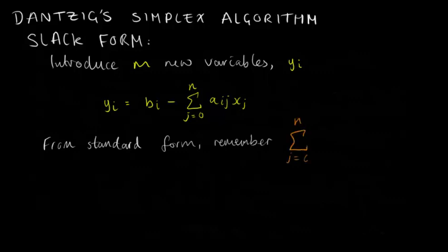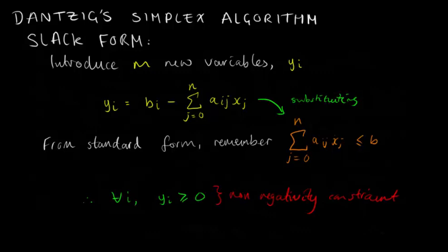This means two things. Firstly, if we plug the slack variables back into the original inequalities, we can see that our complex expressions reduce down to a set of non-negativity constraints over the slack variables, which will make the information easier to deal with algebraically.